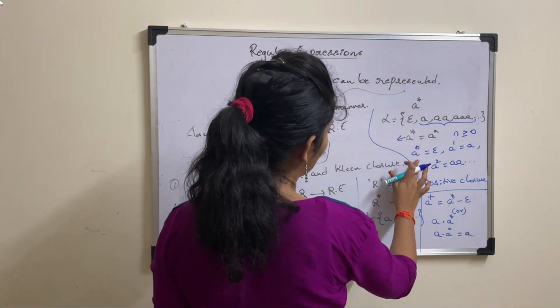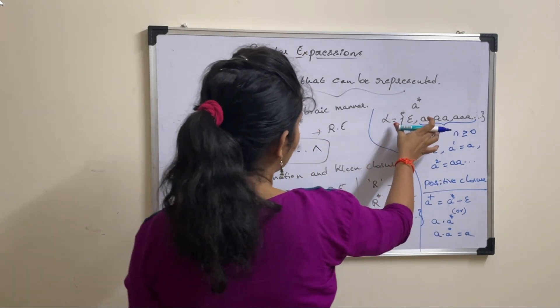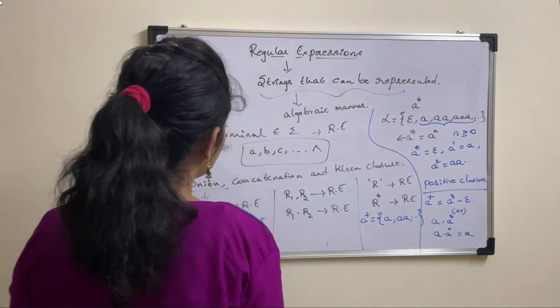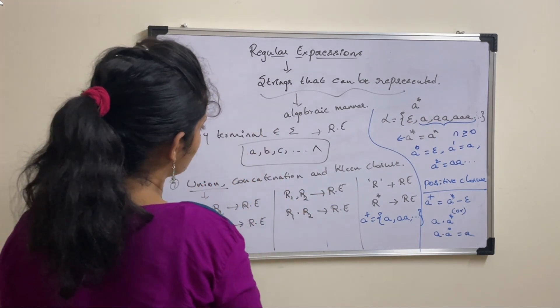That's the basic difference between A star and A plus and how we are defining this language in this way, including epsilon. This is all about the introduction part of regular expressions.